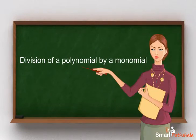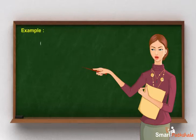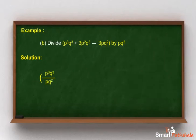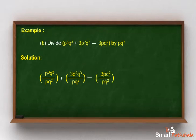Let's learn division of polynomial by a monomial. Divide p cubed q cubed plus 3p squared q cubed minus 3pq squared by pq squared. Solution: we will divide pq squared into each term of the given polynomial. p cubed q cubed divided by pq squared, plus 3p squared q cubed divided by pq squared, minus 3pq squared divided by pq squared, is equal to p squared q plus 2pq minus 3.